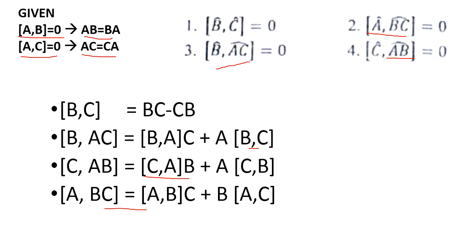Since nothing is given like BC equals CB, the first option cannot hold. In the third option, the commutator of B and A equals negative of the commutator of A and B, which is zero. But the term with the commutator of B and C is not given to be zero, so we cannot say the third option is zero. Therefore the third option is also not the answer.